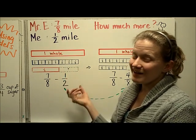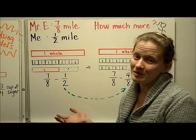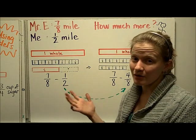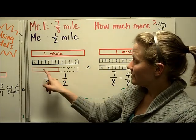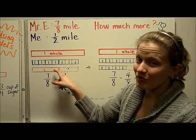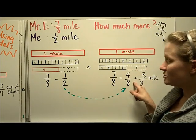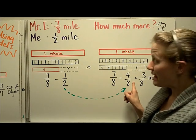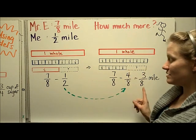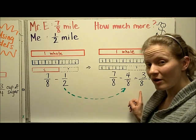We can't do a subtraction problem with fractions unless we have common denominators. So we have to think: could I make an exchange so that they're all the same color or same denominator? I can change the one-half piece into blue pieces — eighths. So I'm going to make an exchange for the one-half and turn it into four-eighths. Now I can do seven-eighths minus four-eighths, and the difference is three-eighths. So Mr. E ran three-eighths of a mile more than I did.